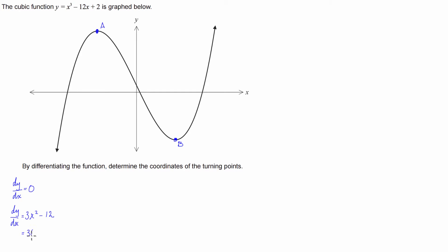First of all, we'll factorize it by 3. And after we've done that, what you'll hopefully realize is inside the bracket we've got a difference of perfect squares. So what we can then do is we can rewrite this as x minus 2, x plus 2, and we have to make that equal to 0.